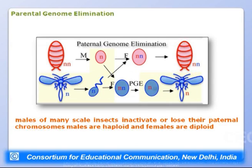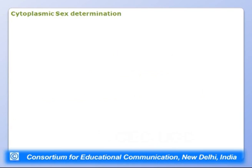Parental genome elimination occurs in males of many scale insects, which inactivate or lose their paternal chromosomes. Males are haploid and females are diploid. Females undergo meiosis to produce gametes; after fertilization, males eliminate the paternal genome from the fertilized egg, which determines sex in this system.